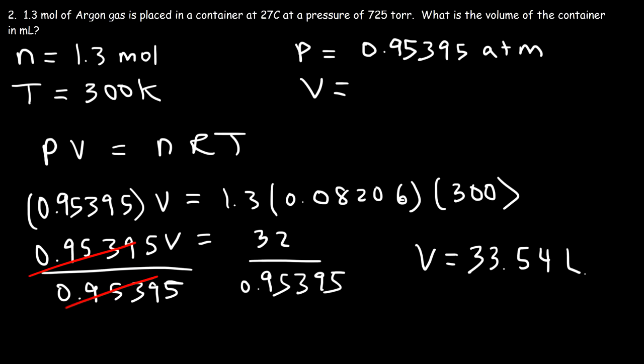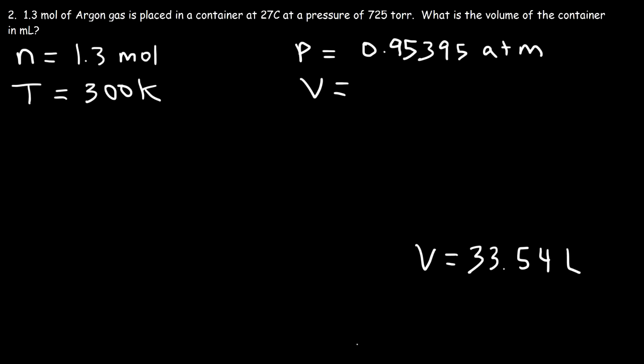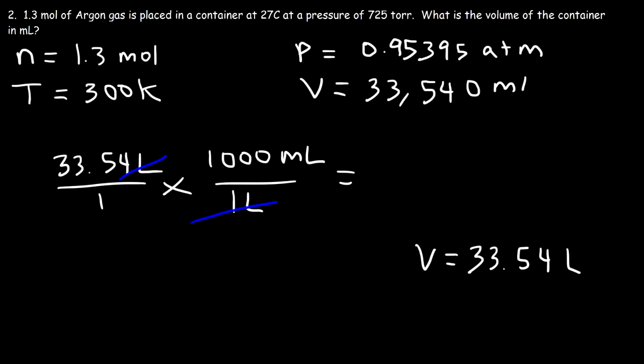Now we want the answer in milliliters, so we need to convert it. So how can we convert liters into milliliters? Well, here's how you can set it up. One liter is equivalent to 1000 milliliters, so all you need to do is just multiply by a thousand. So 33 times a thousand is 33,000, so this is going to be 33,540 milliliters. So that's the answer to this problem.